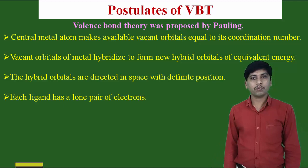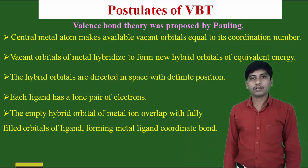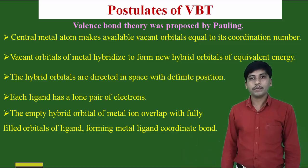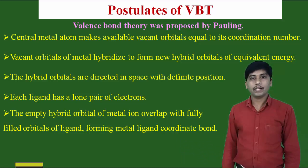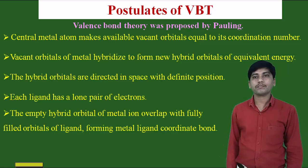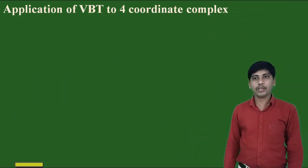Each ligand has a lone pair of electrons. The empty hybrid orbitals formed by the metal atom overlap with the filled orbitals of the ligand, forming the metal-ligand coordinate bond.